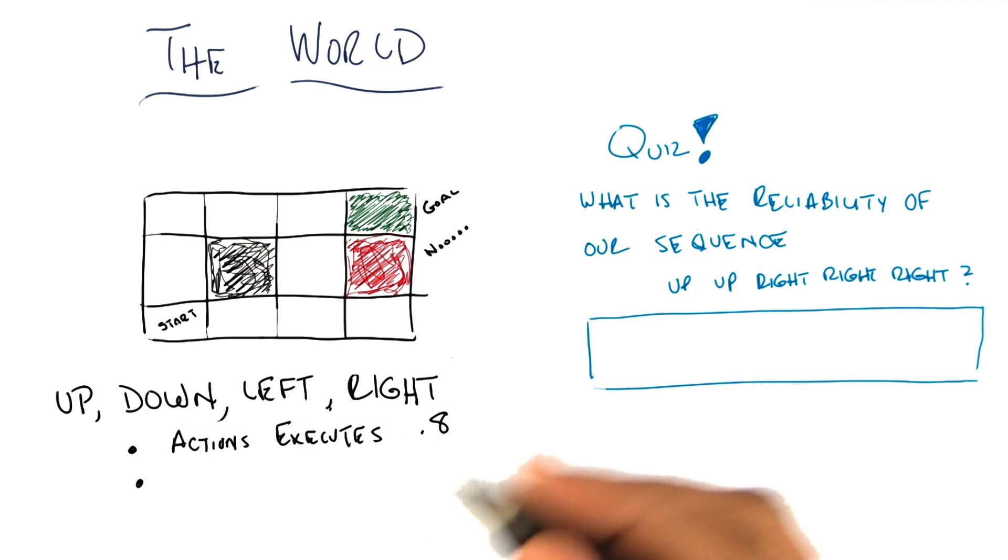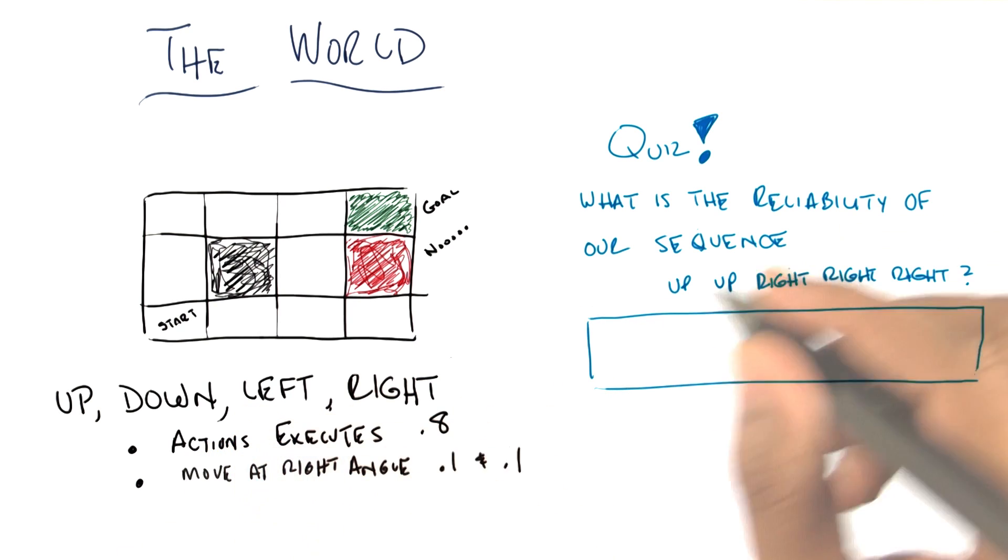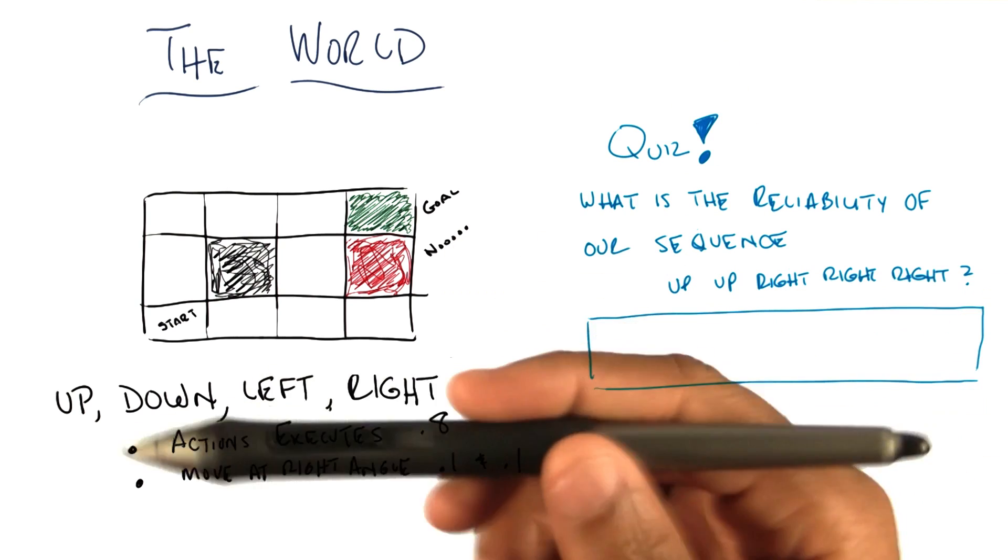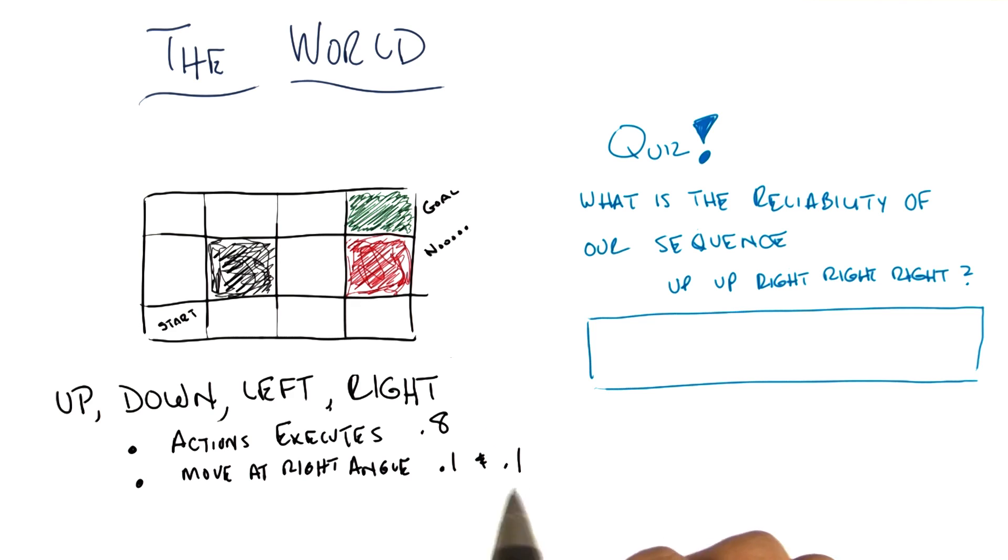Now 20% of the time, the action you take actually causes you to move at a right angle. Now, of course, there are two different right angles you could go to. If you go up, you could go either left or right at a right angle. And so that 20% gets distributed uniformly. Okay? Does that make sense?